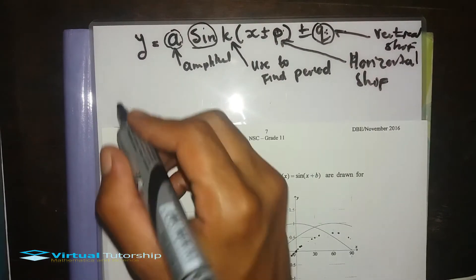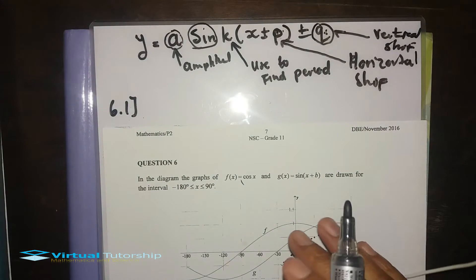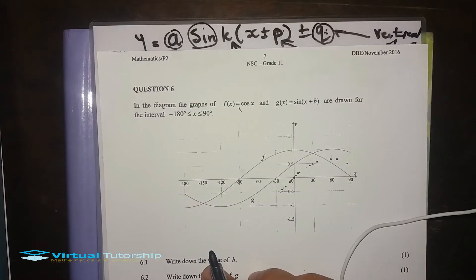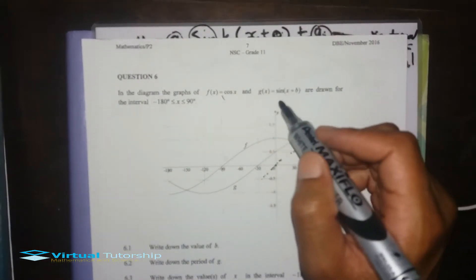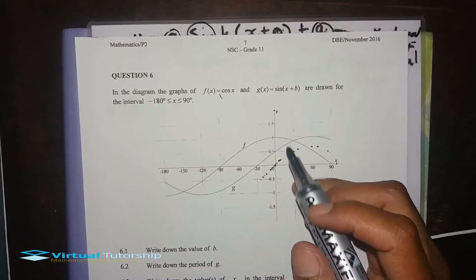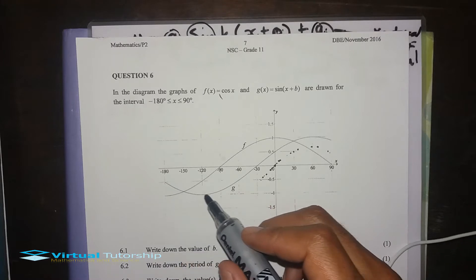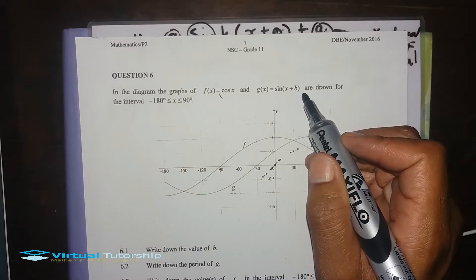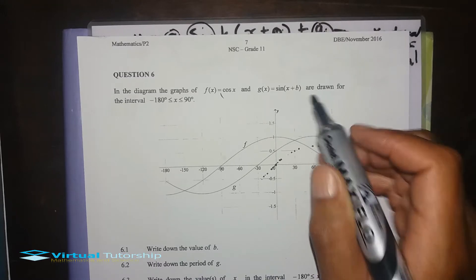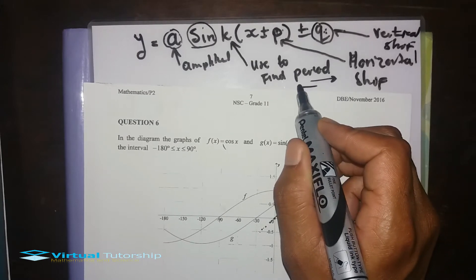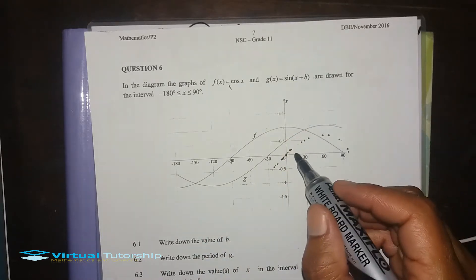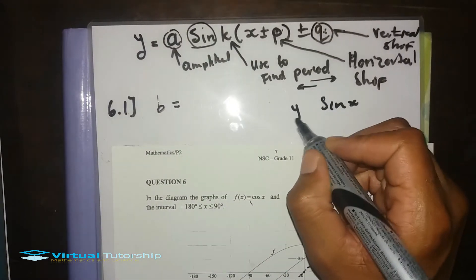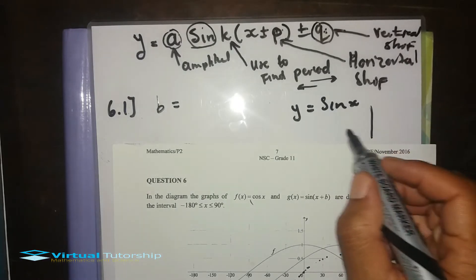To answer 6.1 — they write down the value of b. So from the sketch with the g function or the cosine function, there is a horizontal shift. You can show whether the horizontal shift is to the right or to the left.